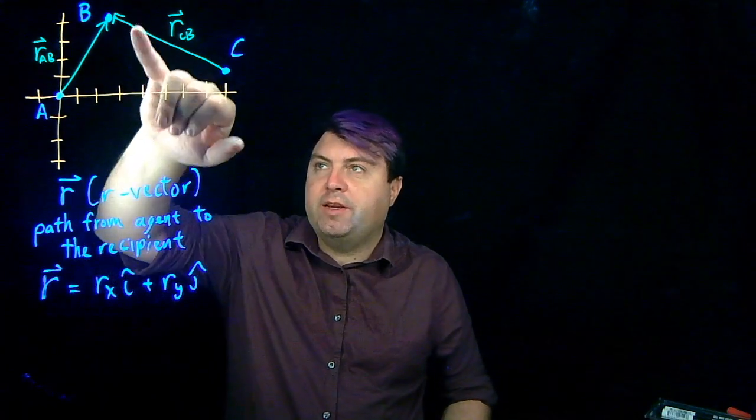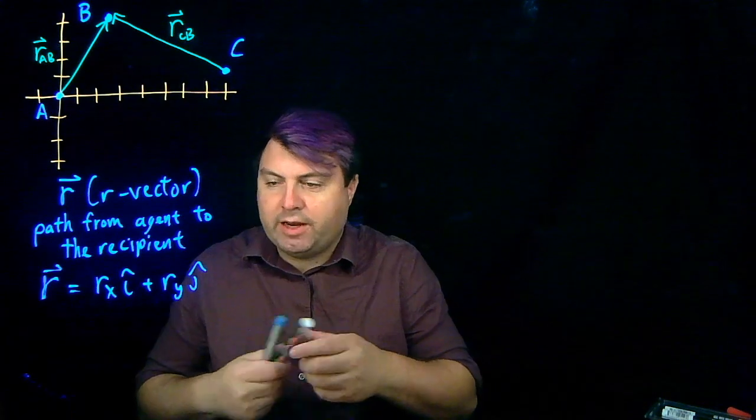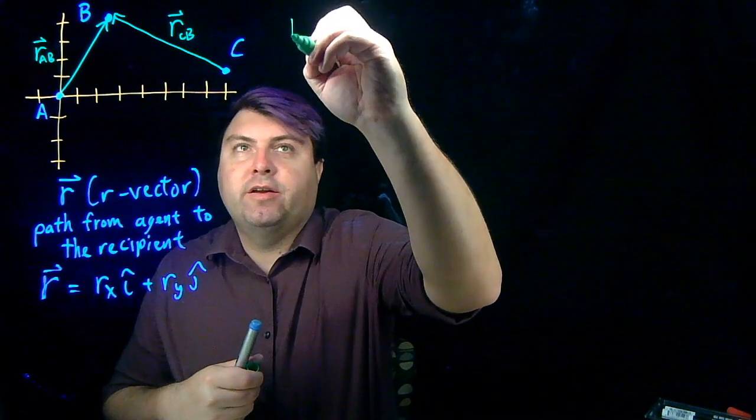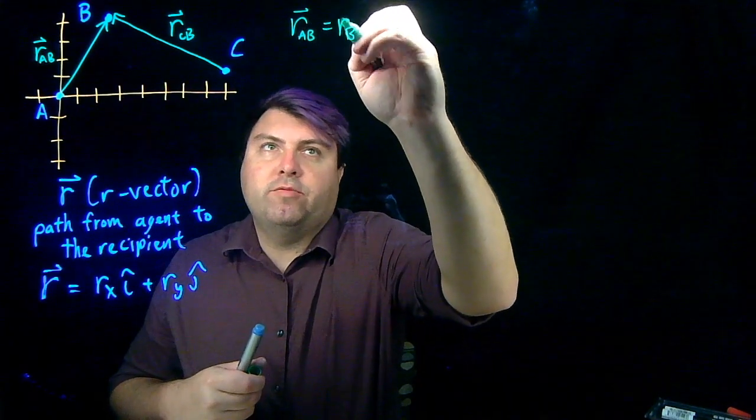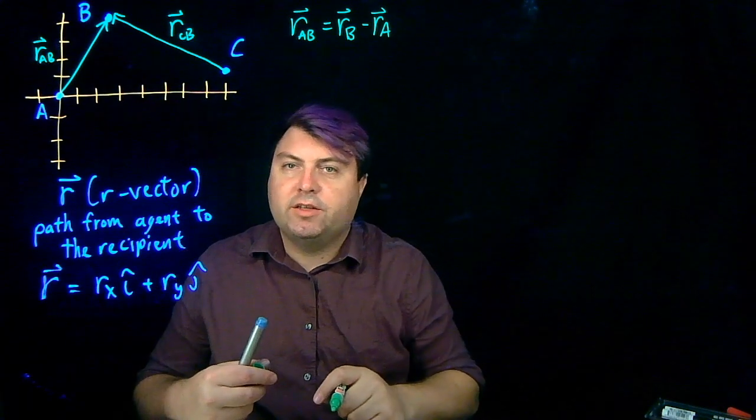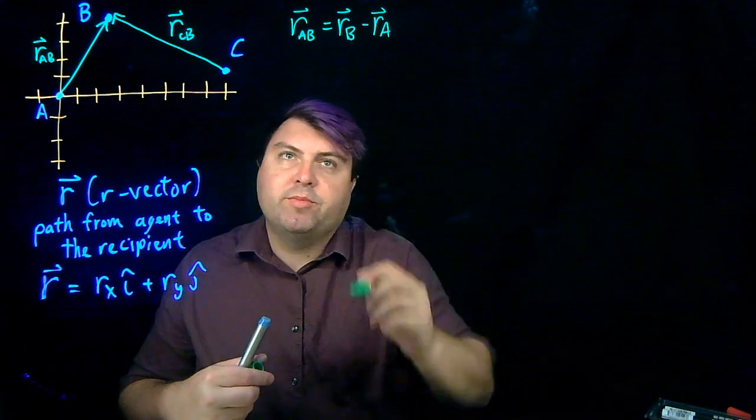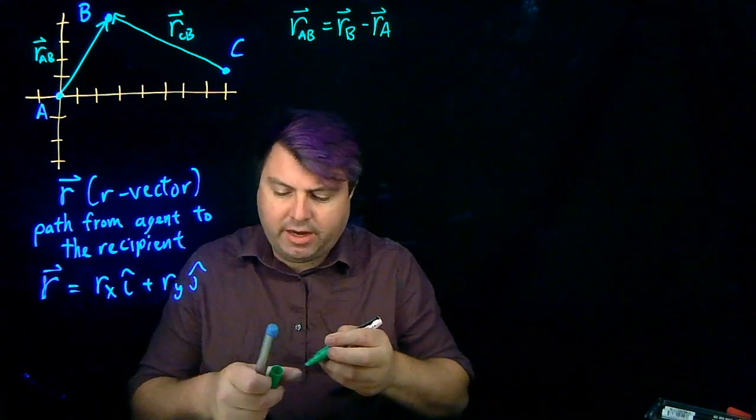All right. So r from A to B. We can also write r-vector AB is equal to r of B minus r of A, the final minus the initial. And this would be their positions. So we can do it this way, or we can very often just kind of count.